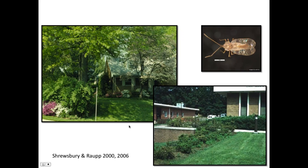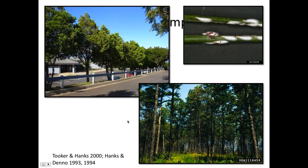Similar work has been done with other critters. This is pine needle scale. The same pattern holds: in urban trees with simple habitats compared to complicated, complex natural habitats, pine needle scale becomes more abundant in simple habitats. They attributed this also, at least partly, to a lack of predators and parasitoids.